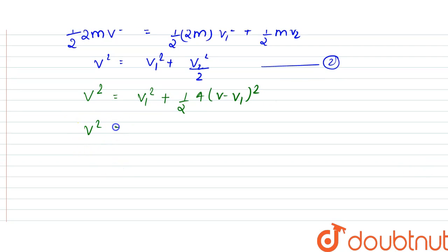So this would be equal to v² equals v₁² plus 2v² plus 2v₁² minus 4v·v₁. Right, so from here we get the value, that is 3v₁² minus